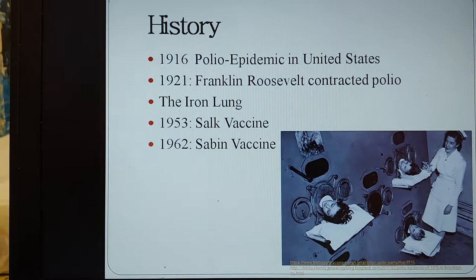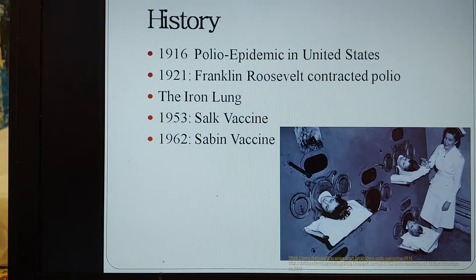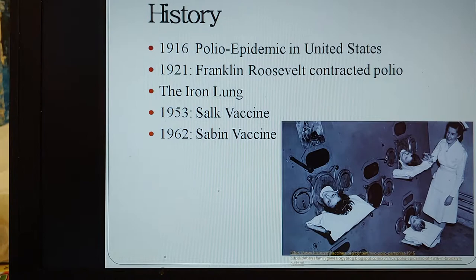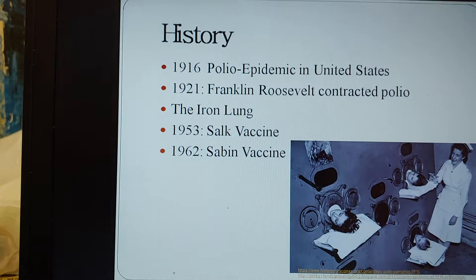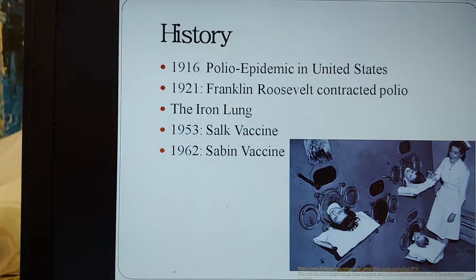In 1953, the Salk vaccine was available and nearly 2 million children participated in the trial. It was found to be safe and it was an inactivated injectable vaccine. In 1962, however, Sabin replaced Salk. Sabin is a live attenuated vaccine and it was easier to administer and cheaper, making it a more preferable choice.